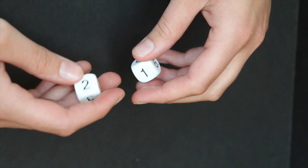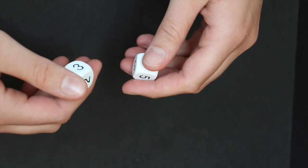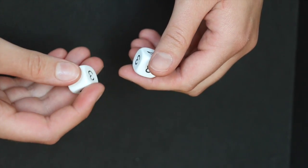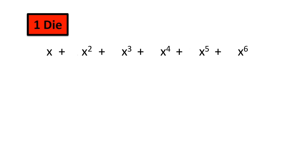How on earth would you find these weird dice? Let's see how to mathematically approach this. We represent the roll of one regular die with this polynomial.